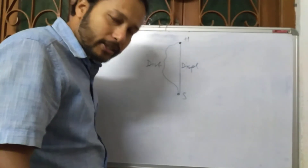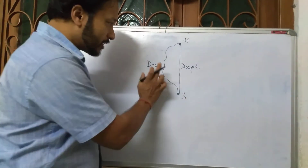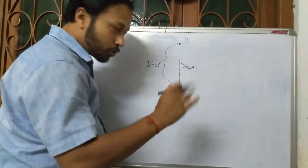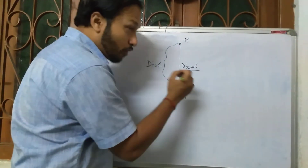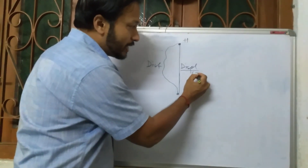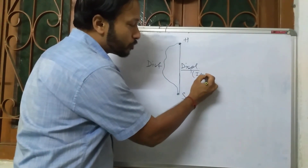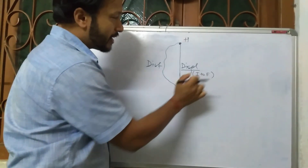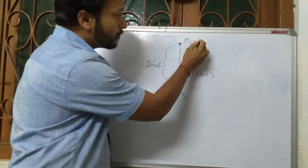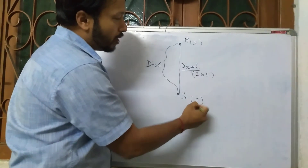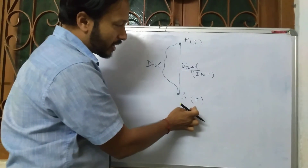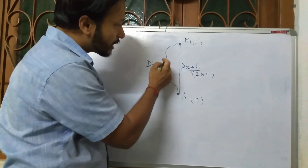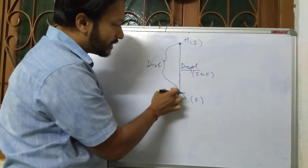The actual road or actual path by which we are traveling is called distance. For displacement, I suggest you always remember this formula: initial to final position. Initially you were at home, finally you are at school — so initial to final is the displacement. But the actual path we cover is the distance.